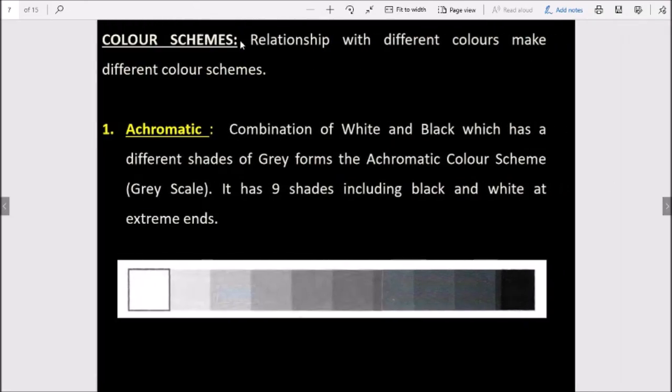Now we have color schemes. Relationship with different colors makes different color schemes. How we arrange colors is what creates a color scheme. First is achromatic. Achromatic is a combination of white and black which has different shades of grey. It is known as achromatic color scheme. It includes black and white at the extremes - black on one side, white on the other side, and in between, different shades of grey formed from their combination. This is our achromatic color.